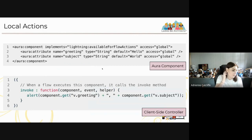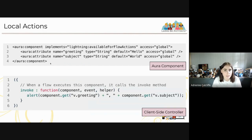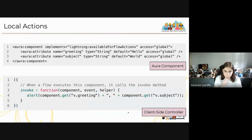The Aura component example prints 'Hello World' when clicked. The component implements 'lightning:availableForFlowActions' and has a client-side controller that invokes an alert when the action is executed through the flow.